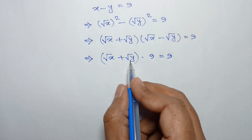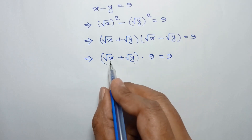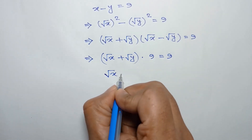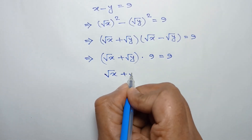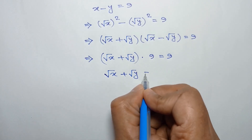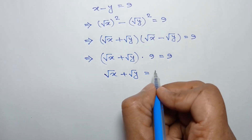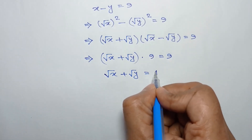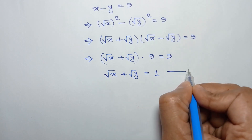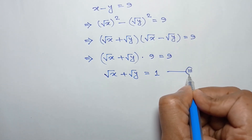Dividing both sides by 9, we can write square root of x minus square root of y is equal to 9 over 9, which is 1. Let's call this equation number 3.